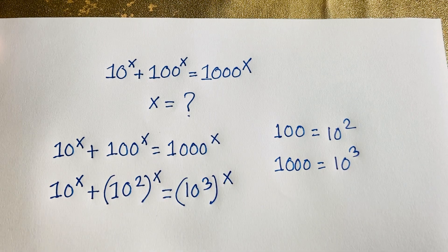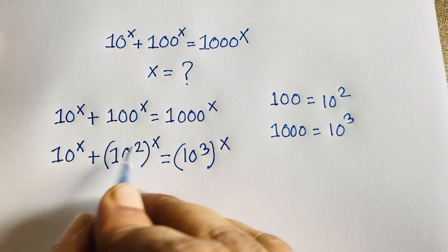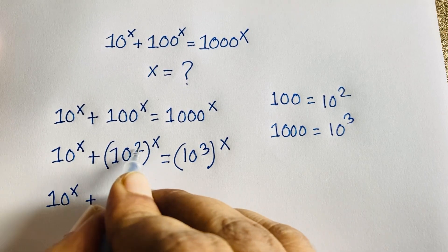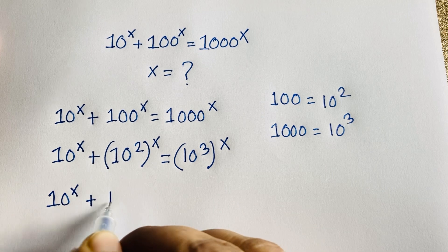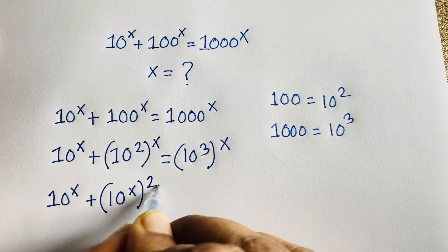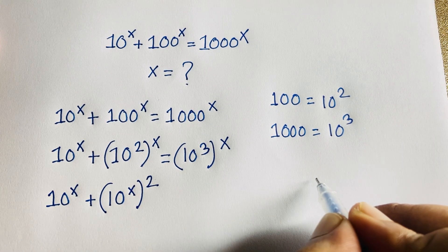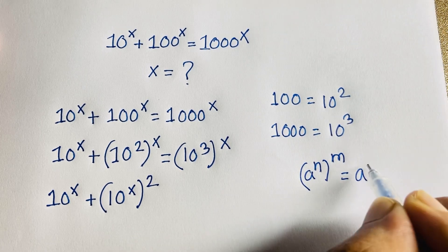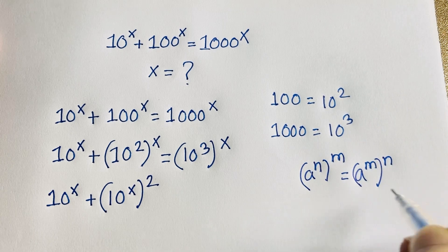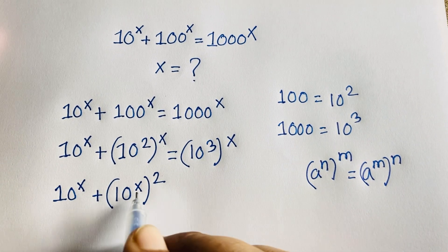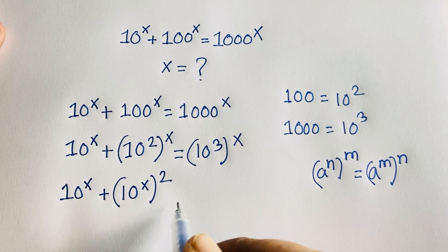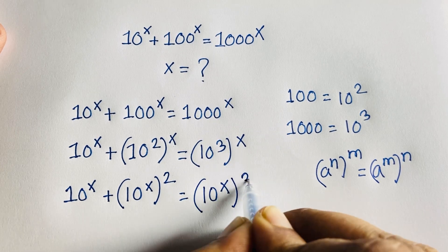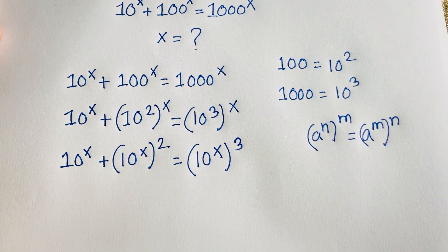Now I can move the exponent inside the bracket. So we have 10^x plus (10^x)² equals (10^x)³. According to the exponential rule, (a^n)^m equals a^(n·m), so the exponent moves inside the bracket.